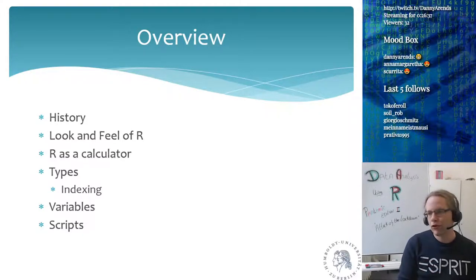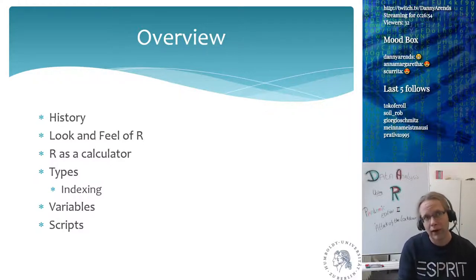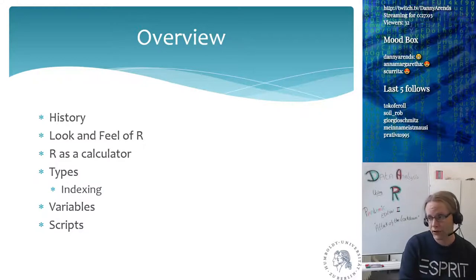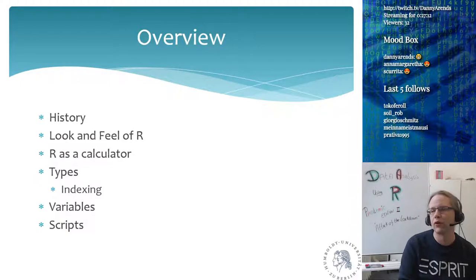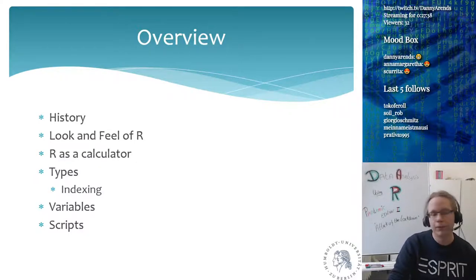For today's overview: we'll talk about the history of R, the look and feel of R, using R as a calculator, and I'll talk a lot about R's type system. The type system in R is one of the most complex things — even after working with R for 14 to 15 years, I still get tripped up by it. Types in R are complex and it does auto upgrading and downgrading of types, which has a massive impact on statistics, especially interpreting something as linear versus categorical.